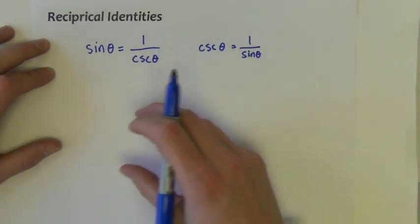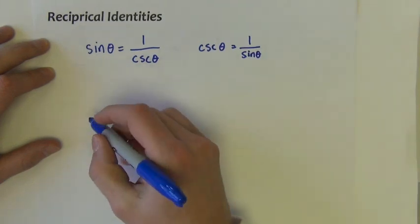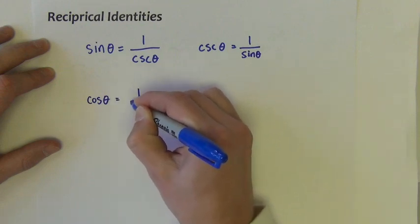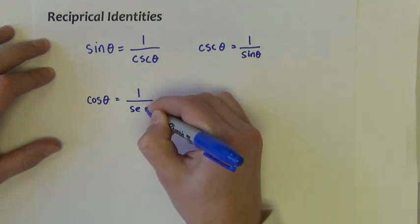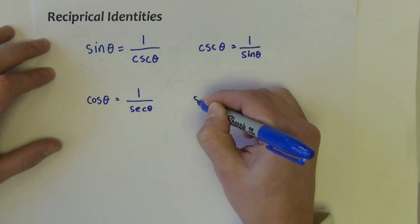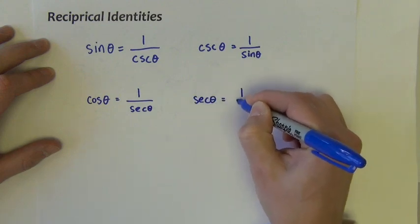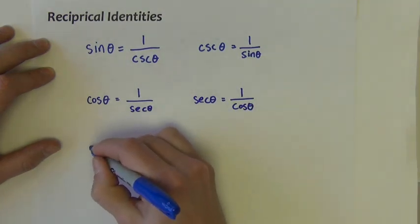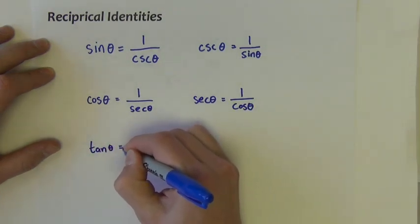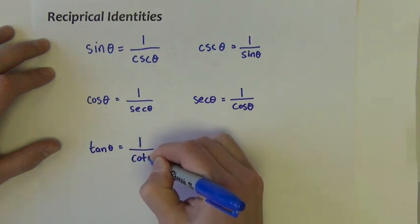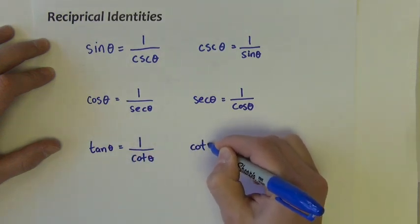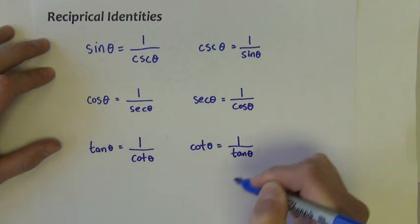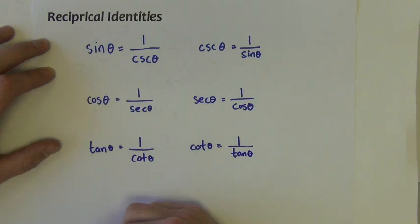Likewise we can write four more — two sets that pair the other reciprocal functions together. Cosine of theta equals 1 divided by secant theta, and its counterpart is secant theta equals 1 divided by cosine theta. Finally, tangent of theta equals 1 divided by cotangent theta, and cotangent of theta equals 1 divided by tangent theta. That gives us six reciprocal identities.